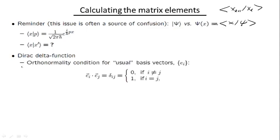To introduce it, let me recall a few simple facts from usual linear algebra. If we have a five-dimensional vector space with a Cartesian coordinate system and basis vectors e1, e2, e3, e4, etc., the Cartesian coordinate system implies that the dot product of two basis vectors eᵢ and eⱼ is equal to zero if they are different — meaning they are orthogonal — or equal to one if they are the same vector, meaning the norm is one.